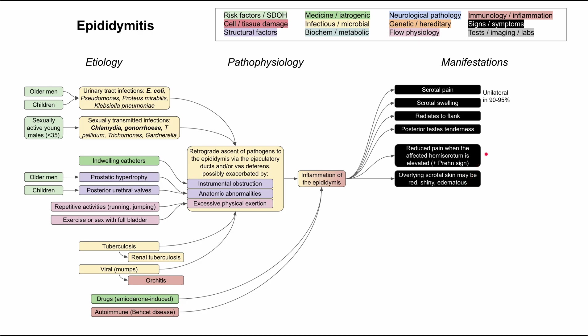There is the Prehn's sign, which is worth knowing. When you elevate the hemiscrotum that's affected, you'll have reduced pain — that's a positive Prehn's sign. This is important because it helps differentiate epididymitis from testicular torsion. In testicular torsion, you don't have reduced pain when you elevate the affected hemiscrotum, making it a negative Prehn's sign. In epididymitis, we have a positive Prehn's sign.